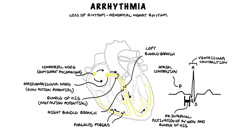Following the QRS complex, the T wave represents ventricular repolarization, which is the time when the ventricular myocardium relaxes. Atrial repolarization, the relaxing of the atrial myocardium, is hidden within the dominant QRS complex on the ECG.